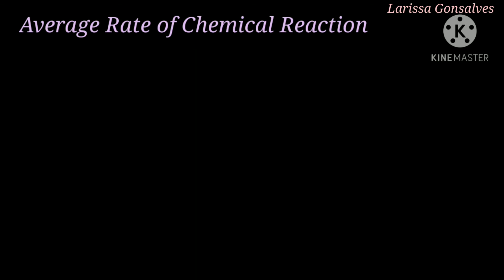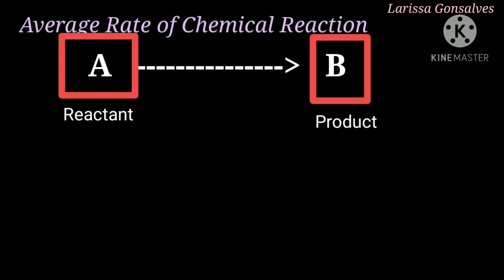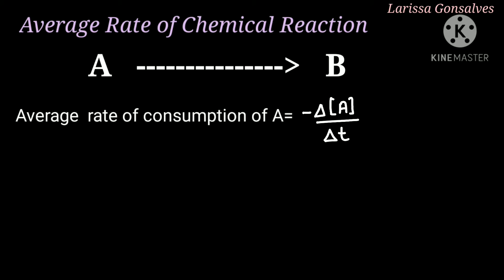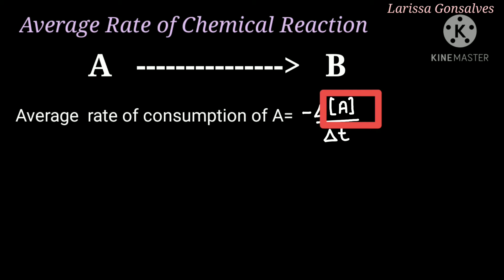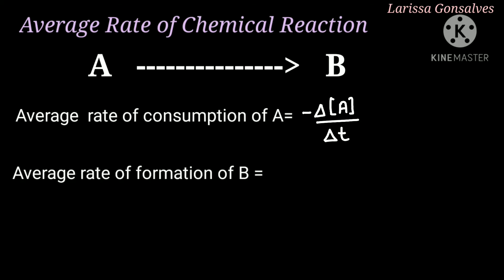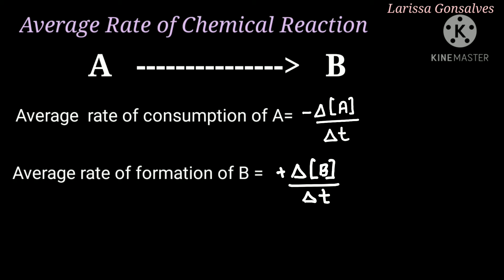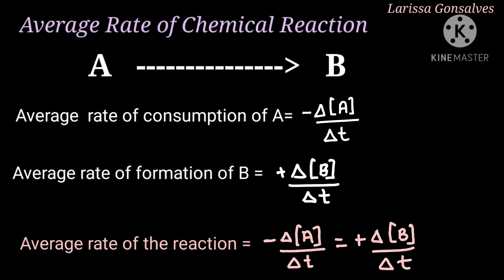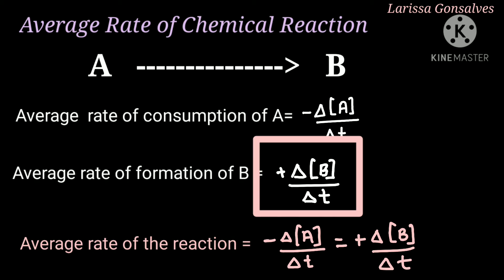Let us consider a general reaction: reactant A giving the formation of product B. Since A is the reactant, it is consumed. So the average rate of consumption of A is equal to minus Δ[A] / ΔT. The minus sign indicates that the species was consumed, and the square bracket indicates the concentration of that particular species. B is the product and it is formed. Hence, the average rate of formation of B is equal to plus Δ[B] / ΔT, where the plus sign indicates the product was formed. The average rate of the reaction is written as: −Δ[A]/ΔT = +Δ[B]/ΔT.